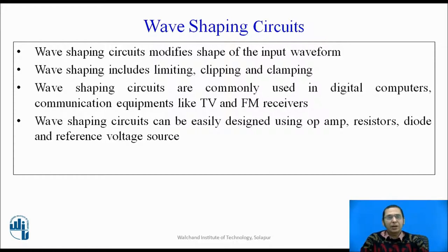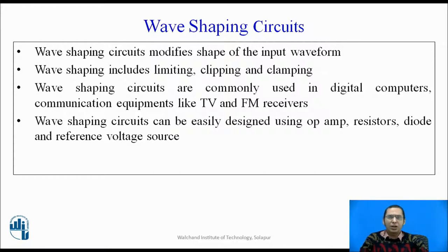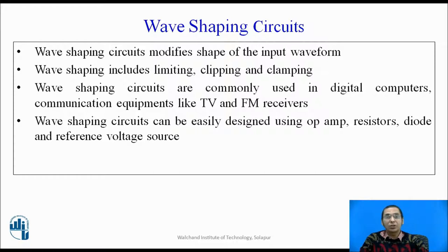Wave shaping circuits are circuits which modify the shape of the input waveform to produce an output waveform which is different from that of the input. There are many types of wave shaping circuits — a few include the voltage limiting circuit, the clipping circuit, and the clamping circuit. Wave shaping circuits are used in various electronic devices, especially digital computers and communication equipment like TV receivers and FM receivers. They can be easily designed using an operational amplifier, along with resistors, diodes, and a fixed reference voltage source.